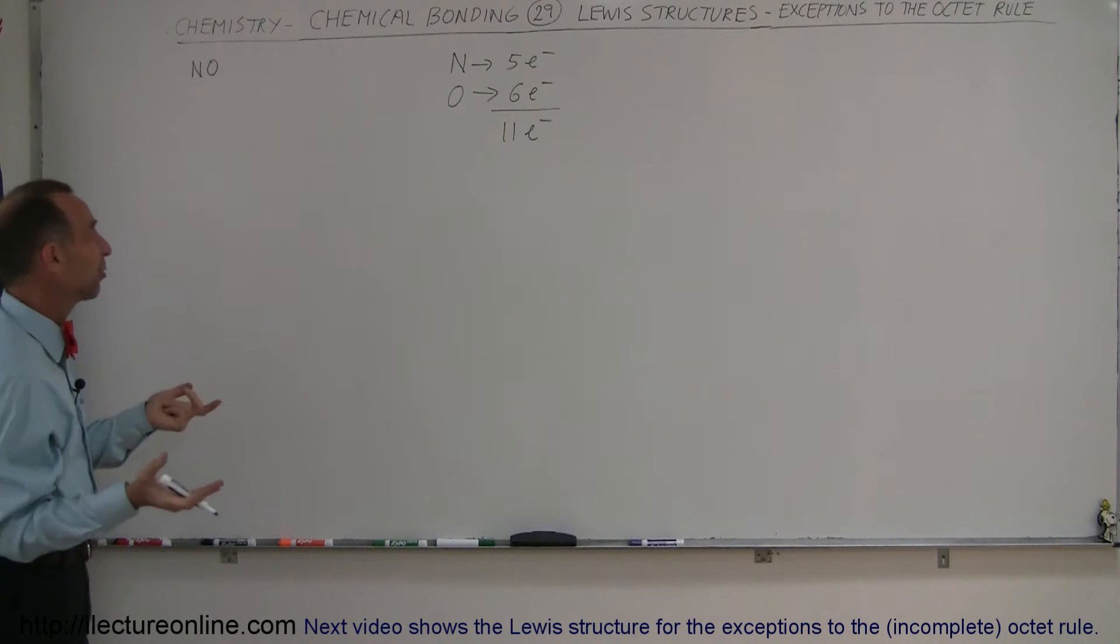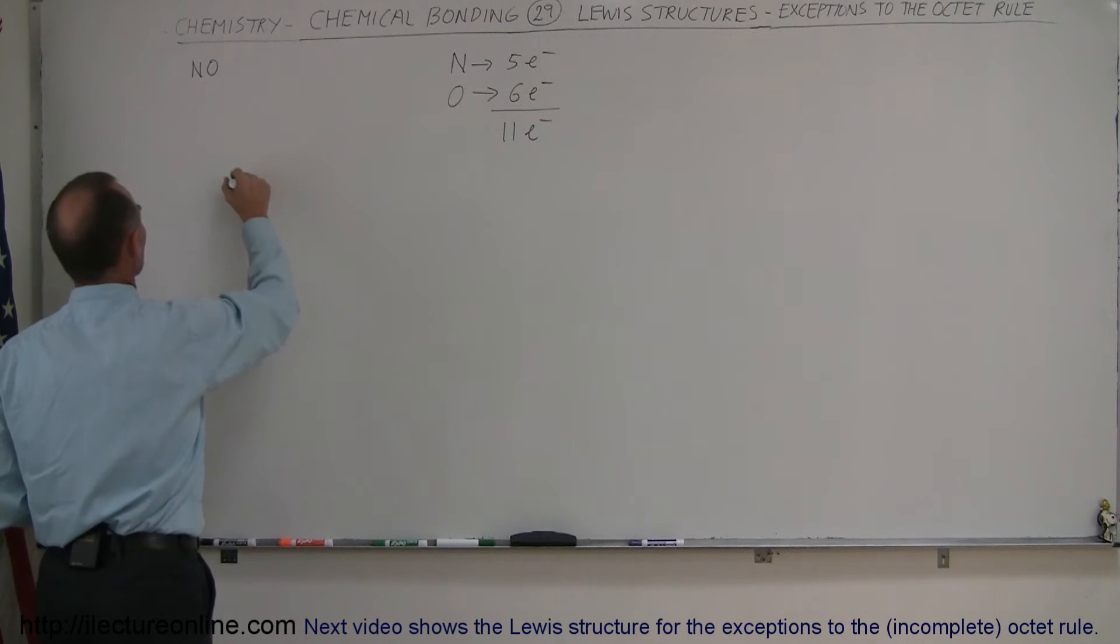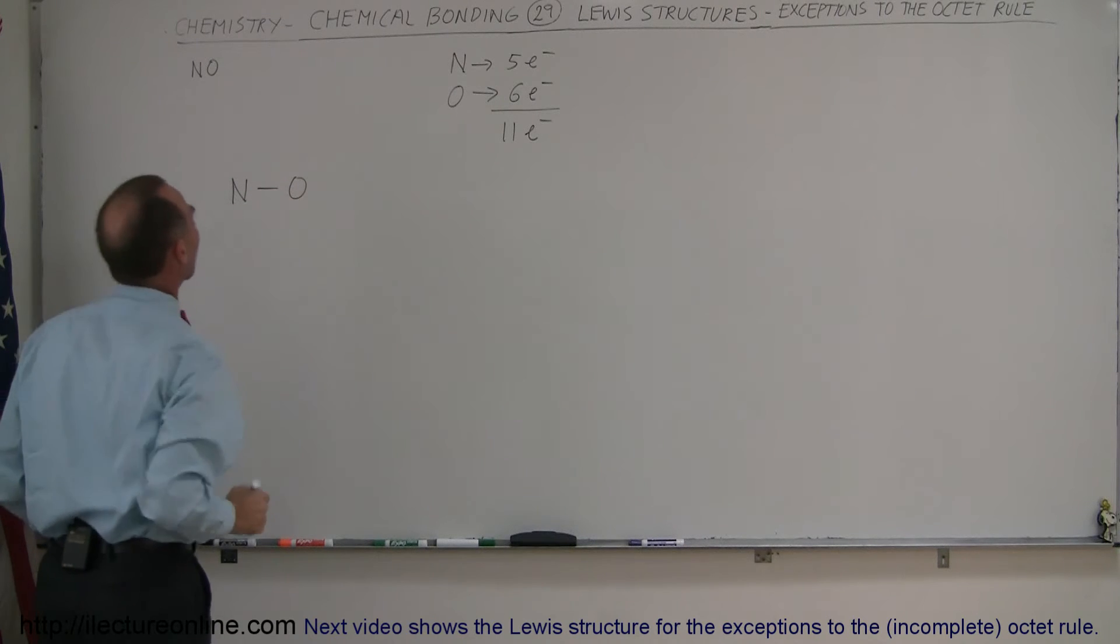Of course since there's only two it doesn't really make a lot of sense to talk about the central block, so we can just say that it's probably going to look something like this. And notice let's start with a single bond between them.